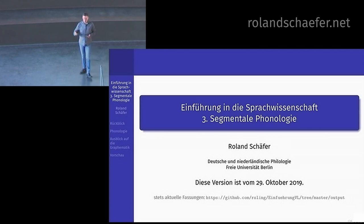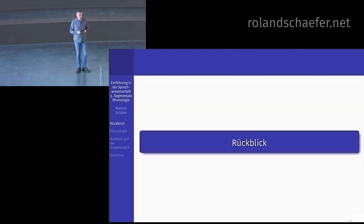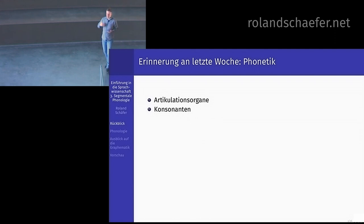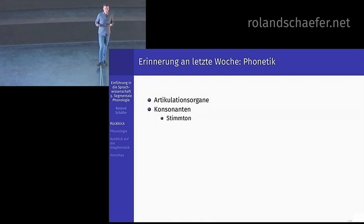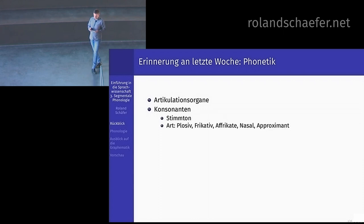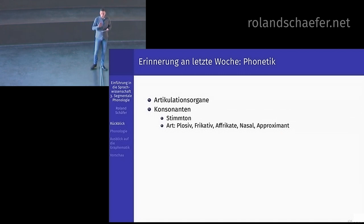Bevor wir zur Phonologie kommen, kommt noch die übliche Nachbereitung. Was haben wir letzte Woche besprochen? Über Phonetik — einerseits, was sind die Artikulationsorgane, und was machen die? Die machen zum Beispiel Konsonanten. Bei Konsonanten haben wir gesehen, der Stimmton spielt eine Rolle — ob Sie im Kehlkopf einen Ton produzieren oder nicht. Und danach können Sie viele Konsonanten unterscheiden. Wir haben über Artikulationsarten gesprochen: Plosiv, Frikativ, Afrikate, Nasal, Approximant — das sind sie fürs Deutsche.